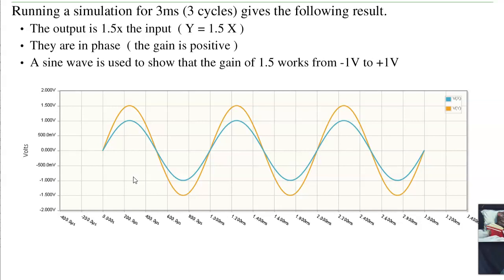And the zero crossings tell you that this is in phase. The output, there's no time delay. The input's peak is the output's peak. That's not always going to be the case, but for this resistor circuit, that is. So there's a non-inverting amplifier, gain of 1.5.